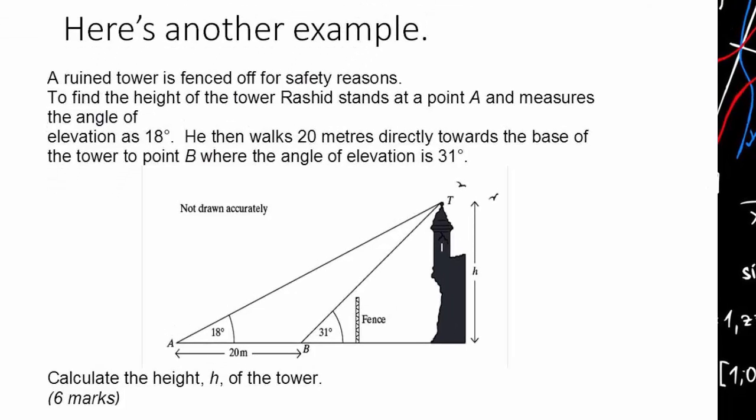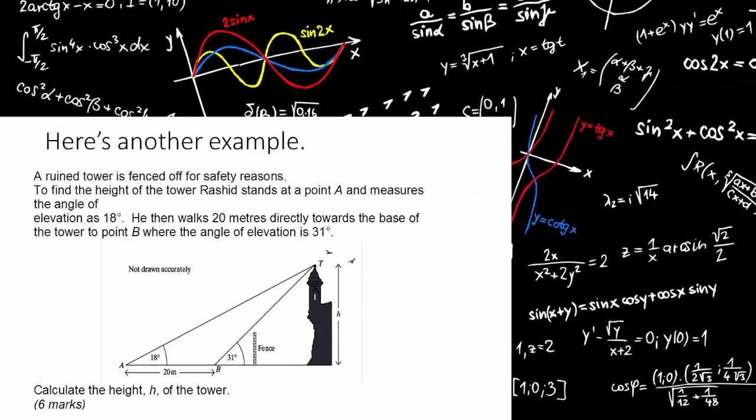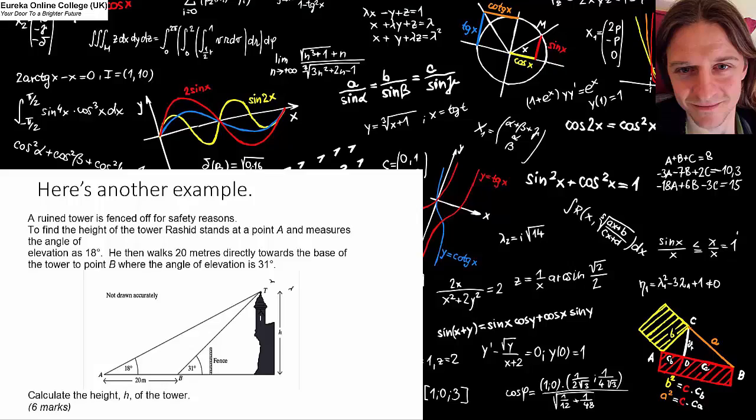The next problem I'm going to look at is quite a tricky one. It's a ruined tower fenced off for safety reasons. To find the height of the tower, Rashid stands at point A and measures the angle of elevation as 18 degrees. An angle of elevation is how high up something is from taking the ground as horizontal. So if you remember those, they're called clinometers in geography, if you remember using those kind of devices which measure the angle of elevation, then that's what they've done and they found the angle is 18 degrees. However, when he's walked 20 meters forwards directly towards the base of the tower to point B, the angle of elevation there is 31 degrees, and that's all he needs to find the height of the tower, which is quite interesting actually. It shows how easy it is to find the heights of objects without actually climbing them, another useful facet of trigonometry.